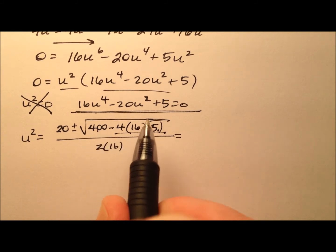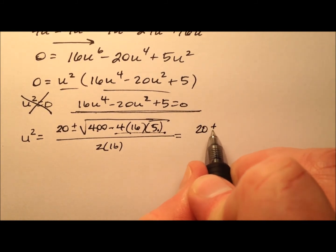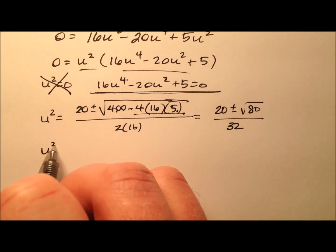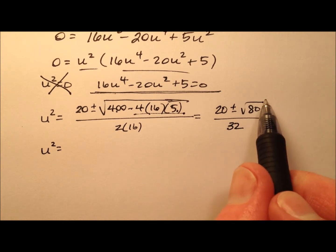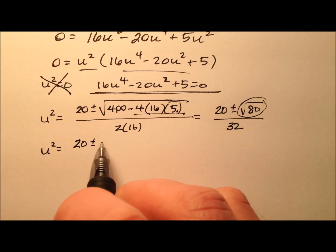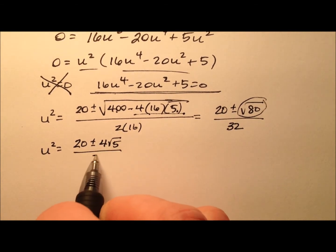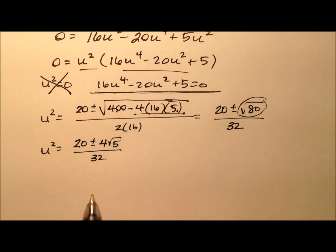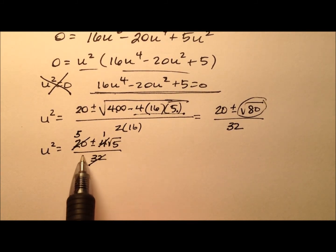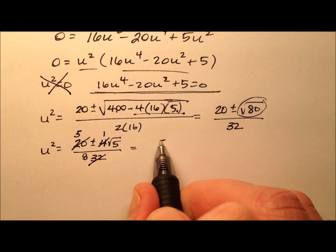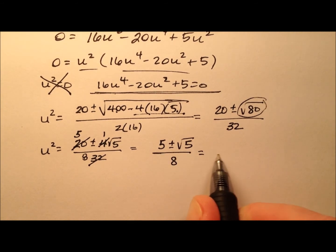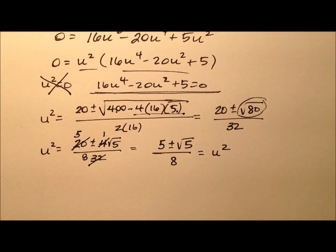Simplifying, u squared equals 20 plus or minus 4 radical 5, all over 32. Dividing through by 4 gives 5 plus or minus the square root of 5, all over 8. Taking the square root of both sides gives u, which is the sine of 36 degrees. Since sine is positive in the first quadrant, we take the positive square root.